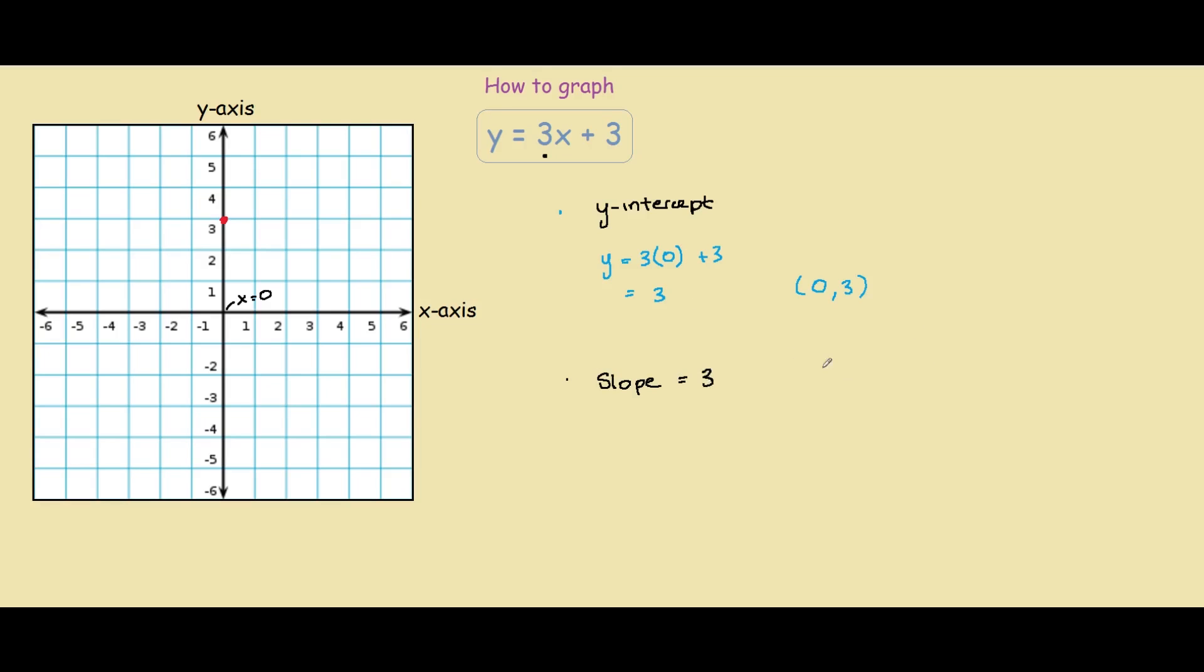Now, for you guys wondering what slope means, it means that every time you go horizontal one unit, so if you go horizontal one time, you go up 3. So in this case, 1, 2, 3. And this will be our next point.